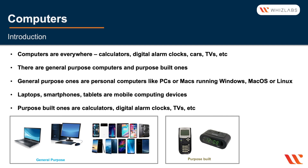There are general purpose computers and purpose-built ones. The general purpose ones are what we typically associate with the term 'computer': desktops, laptops, smartphones, tablets, and so on, running Windows, Mac OS, or Linux. The purpose-built ones like calculators, digital alarm clocks, and GPS units can do only one or two functions, and they do that really well. General purpose computers can do multiple functions and can even be programmed to do more.